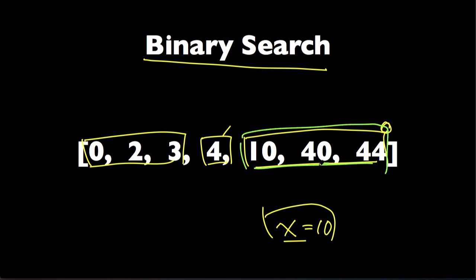We look at the element in the center, 40, and we see that X is less than this element. So now we can just look at the left half of this array to find X, and when we look at this element, we find that X is equal to 10, so we are done.